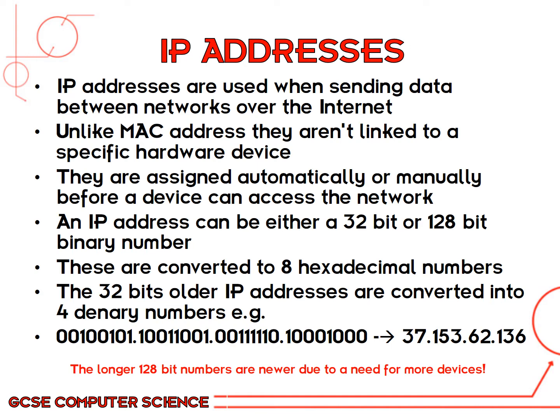For example, 37.153.62.136 could be a pretty common IP address format for a website. However, due to so many digital devices in modern society, we now have to use a 128 bit binary number, which is converted to 8 hexadecimal numbers. This is because there are so many devices that the old format didn't have enough IP addresses for them.